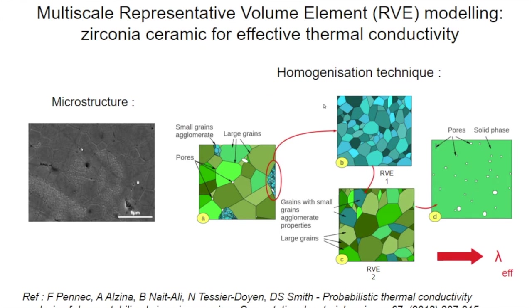In my second example I want to illustrate modelling done at the grain scale — the homogenization technique. This is the case of zirconia ceramic with two different grain sizes and pores, as we can see in the micrograph. In terms of a representative volume element, we'd have a first stage where we calculate the solid phase thermal conductivity taking an average value over the small grain and large grain regions. Then this is combined in a second step where we take the solid phase thermal conductivity and combine it with that of the pores, giving us an overall thermal conductivity.